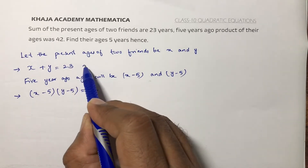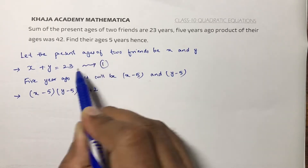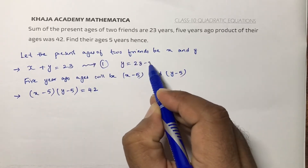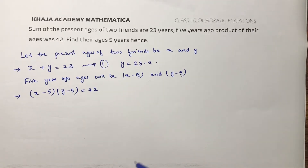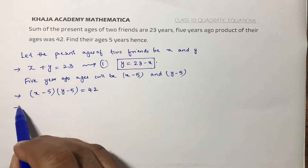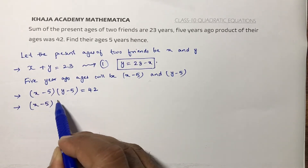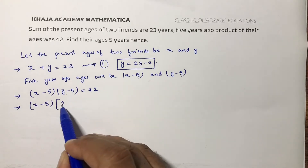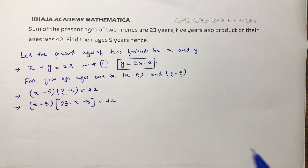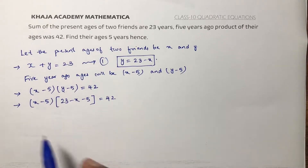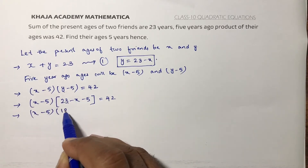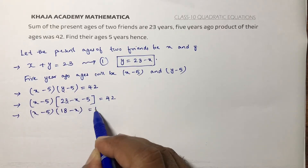From equation one, the value of y will be 23 minus x. Substituting this value in place of y, we get: x minus 5 into 23 minus x minus 5 equals 42.